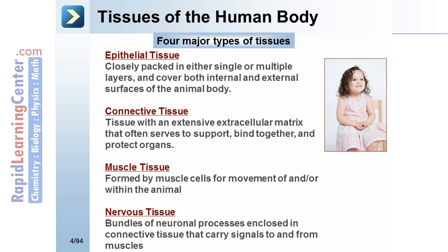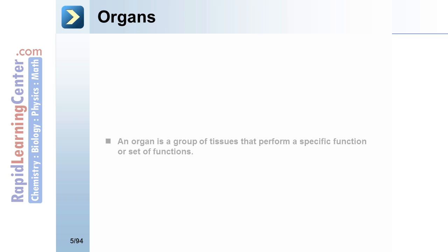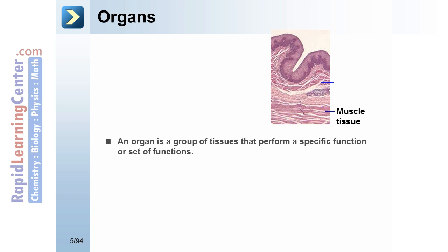Muscle tissue is formed by muscular cells for movement of and or within the animal. Nervous tissue consists of bundles of neuronal processes enclosed in connective tissue that carry signals to and from muscles and organs.